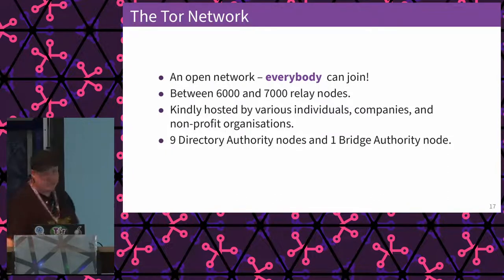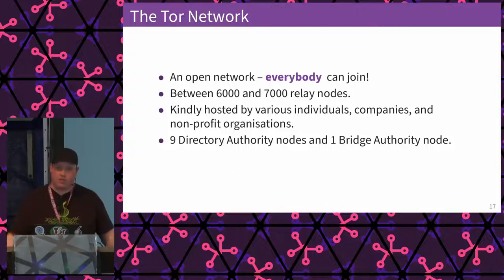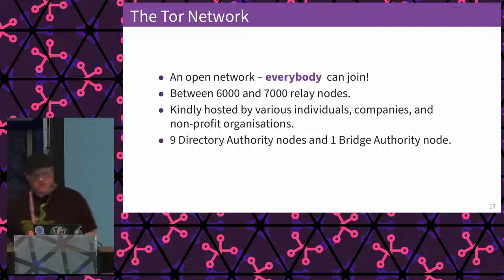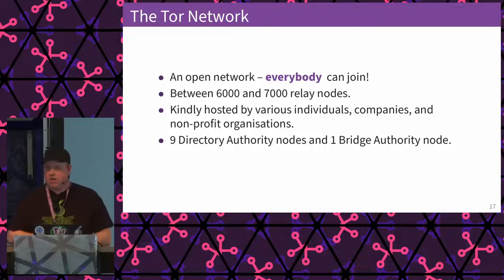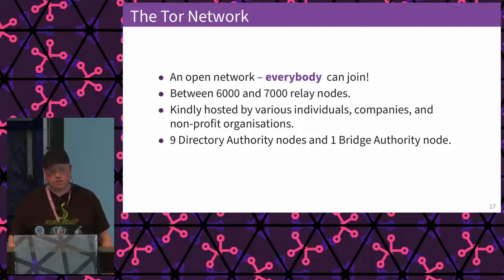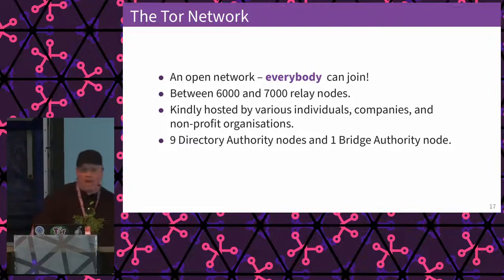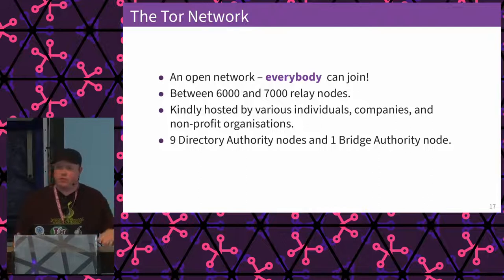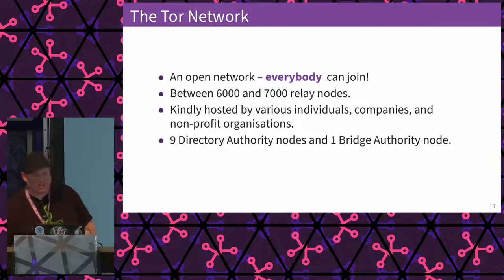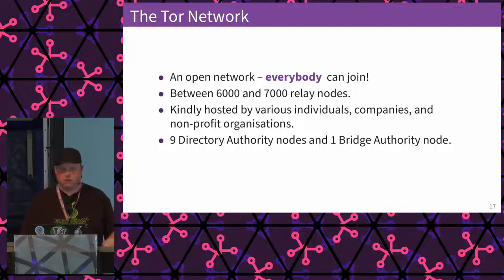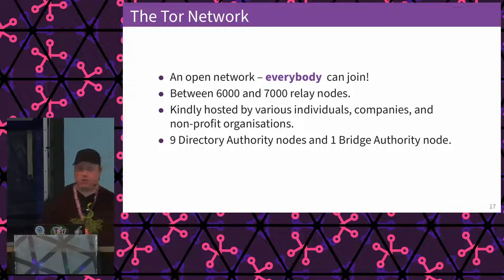The Tor network is an open network — it means everybody can join. If you have an IP and some bandwidth, you're able to set up a node. We right now have between 6,000 and 7,000 relay nodes, hosted by people here, non-profit organizations around the planet, or individuals who set up a machine at home because they have spare capacity. We have nine what we call directory authorities — specifically trusted nodes, a bit like a CA in the X.509 TLS system. We also have a bridge authority for non-public bridge nodes for people in censored areas.